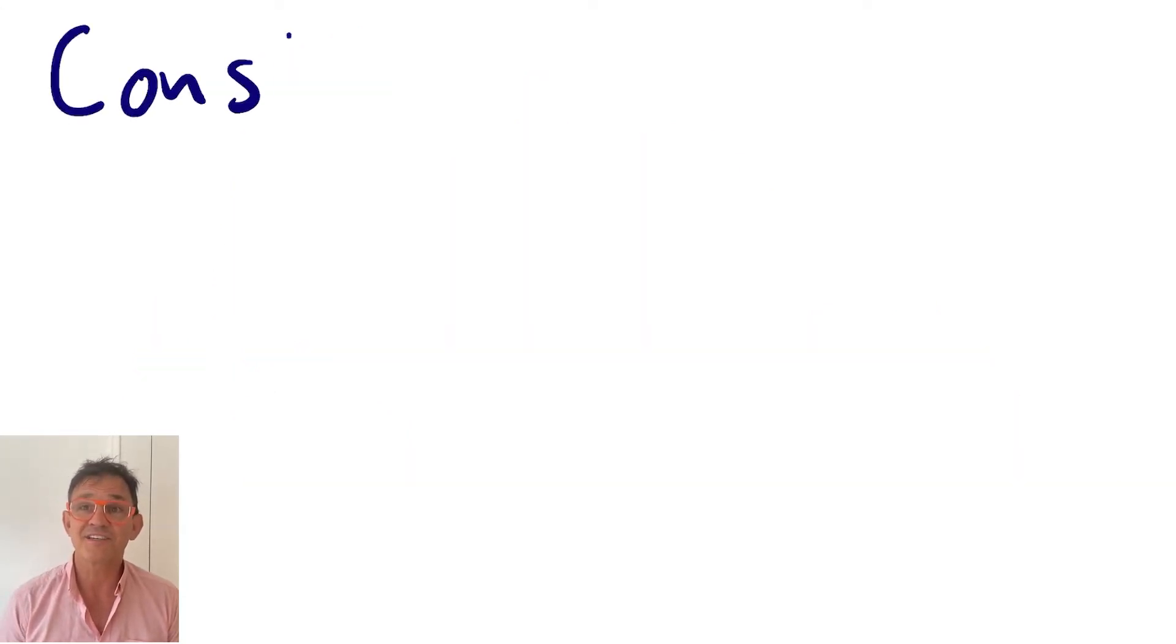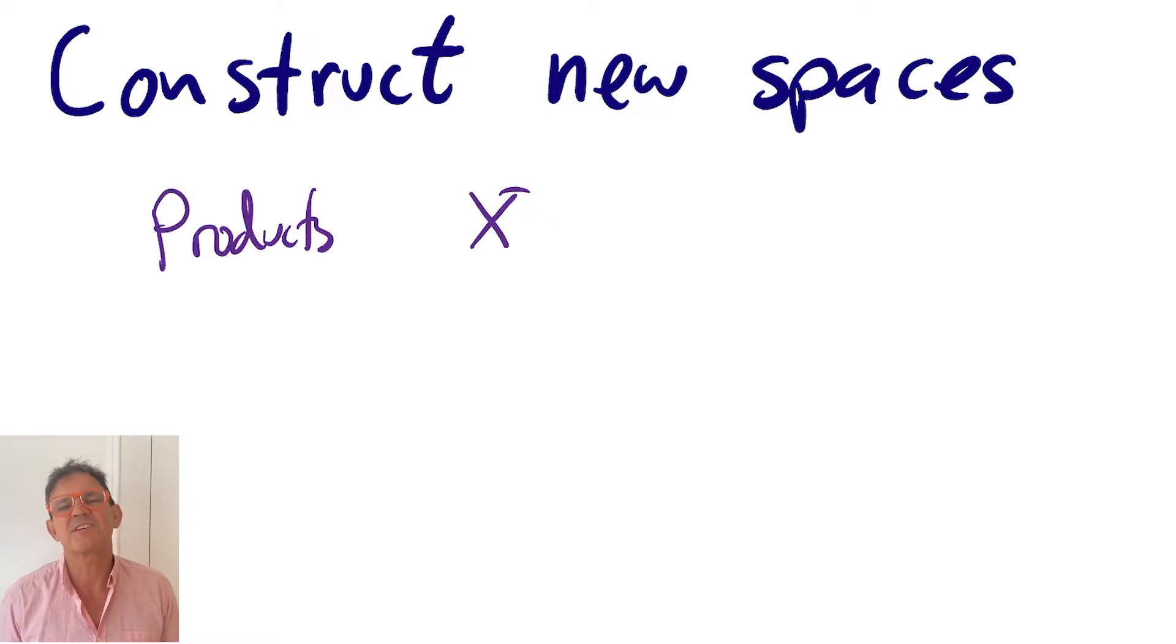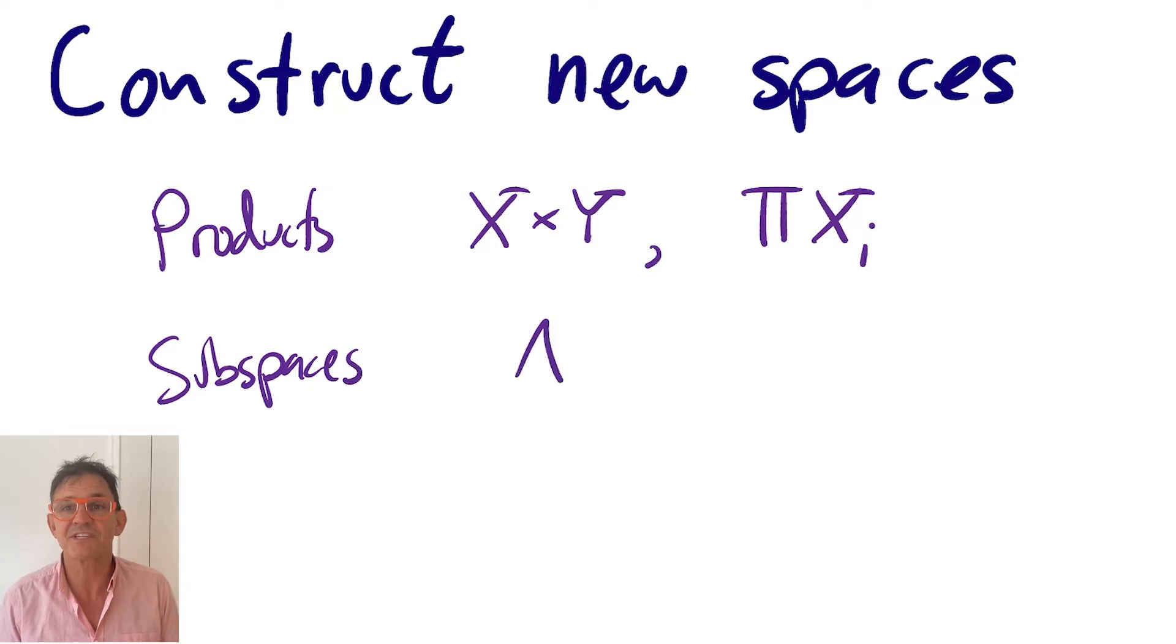In topology, as in many mathematical fields, there are ways to construct new objects from old ones. We have products, quotients, subspaces, unions, and other constructions.